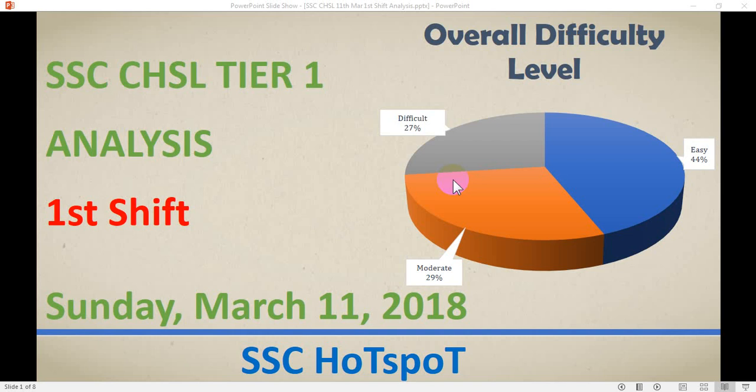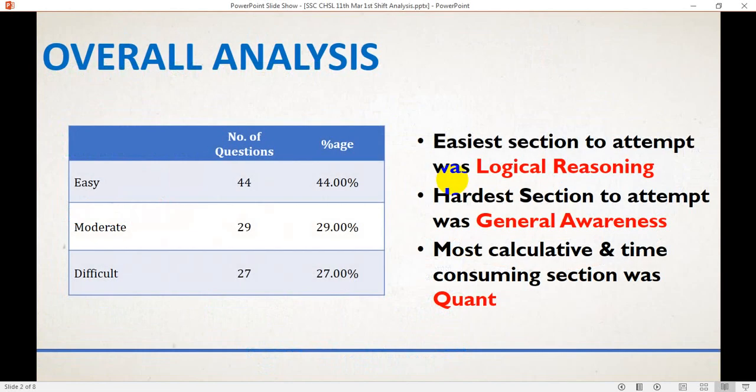Hello and welcome to SSC Hotspot. Our discussion topic for today is SSC CHSL Tier 1 analysis for the shift held on 11th March 2018, Sunday. Overall difficulty level: 27% of the paper was difficult, 29% moderate, and 44% easy.